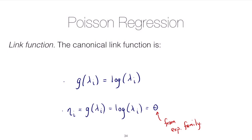Now that we've specified the three components of the Poisson regression model, we can use sample data to estimate the parameters. As with binomial regression, the estimation procedure is maximum likelihood, which we'll discuss briefly in the next lesson. Once we have the MLE parameter estimates, we can check the fit of our model using the deviance statistic or chi-squared statistics, comparing the current model to the saturated model.